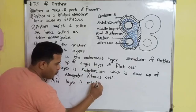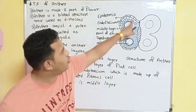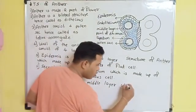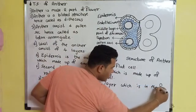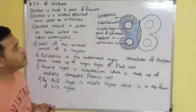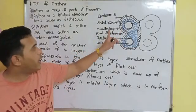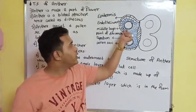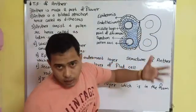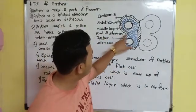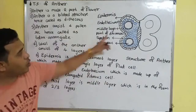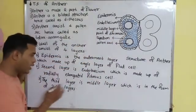The third layer is the middle layer, which is in the form of two or three layers. There is a point of dehiscence — that is the point where the layers are absent or weak. When the anther bursts to release the pollen grains, it gets burst from this point of dehiscence.